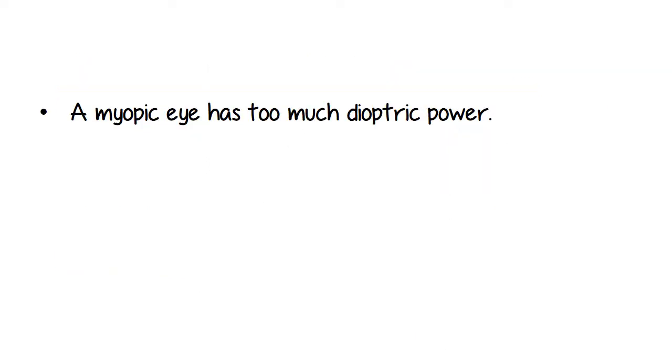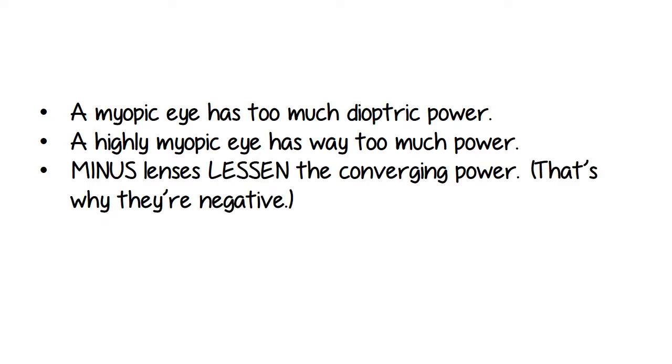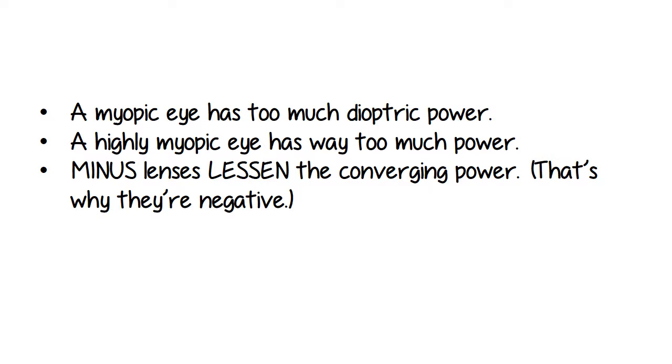Okay, recap. A myopic eye has too much dioptric power. A highly myopic eye has way too much power. Minus lenses lessen the converging power. That's why they're negative. Minus lenses decrease the power of the eye.